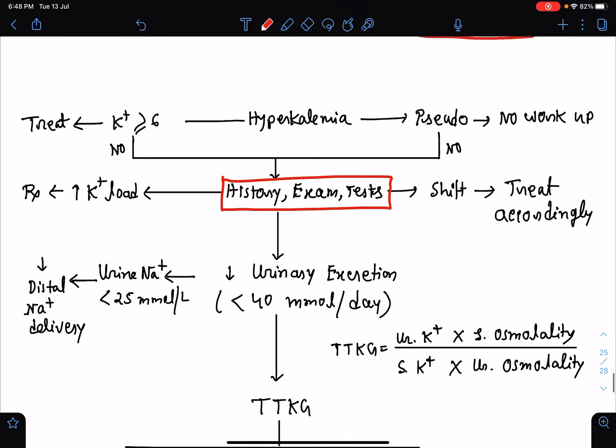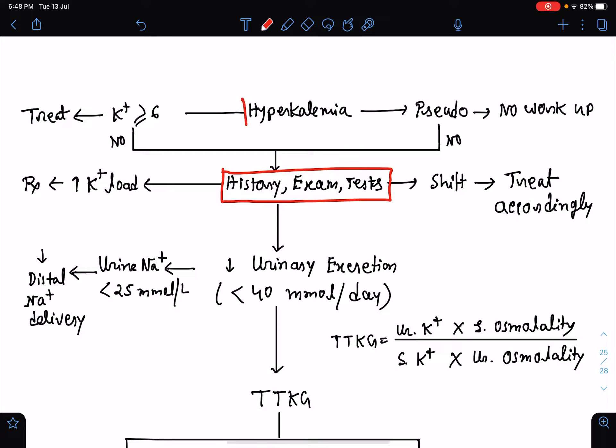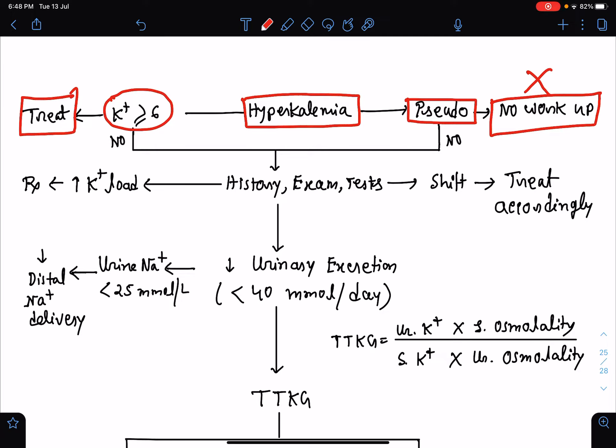Now, if we talk about the diagnostic flow chart of hyperkalemia, once we know that the patient is having hyperkalemia, we need to know if it is a case of pseudo-hyperkalemia or not. If it is a case of pseudo-hyperkalemia, then no further workup is needed. And if the serum potassium concentration is more than or equal to 6 at presentation, we directly need to go ahead with the treatment because this is a very emergent condition. If there is no pseudo-hyperkalemia and serum potassium concentration is below 6, then we may go ahead with history, examination, and necessary tests. After history and examination, if we find this is a case of transcellular shift, we need to treat accordingly.